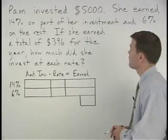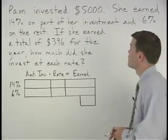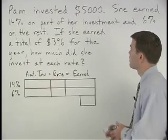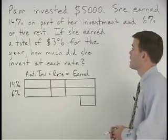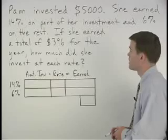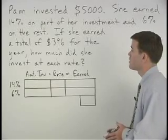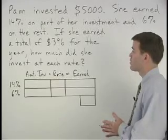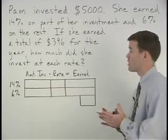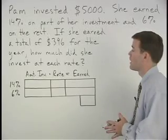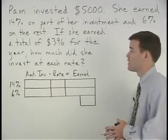Pam invested $5,000. She earned 14% on part of her investment and 6% on the rest. If she earned a total of $396 in interest for the year, how much did she invest at each rate?